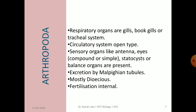The circulatory system is of open type — the blood flows in haemocoel instead of blood vessels. The blood is called haemolymph because it is colorless and contains white blood corpuscles. Sensory organs like antennae and eyes — which may be simple or compound — are present. Statocysts or balance organs are also present.